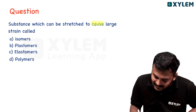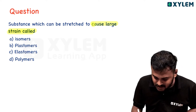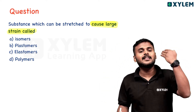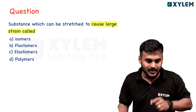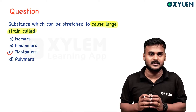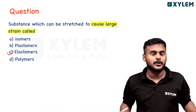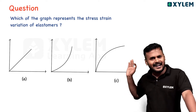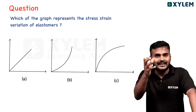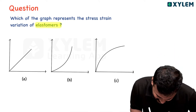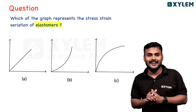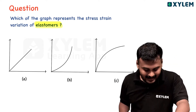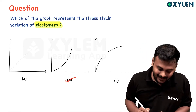A substance which can be stretched to cause a large strain is called an elastomer. For example, blood pumping in a vessel is an example. Elastomers can undergo very large stress. The graph that represents elastomers is option B — it shows a material that does not obey Hooke's law in the same way and can sustain large strains.